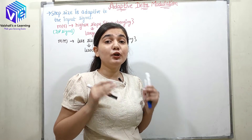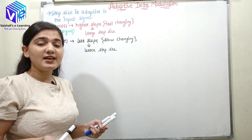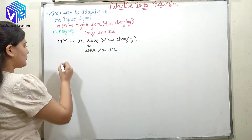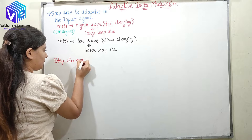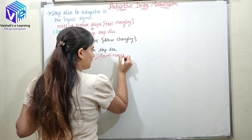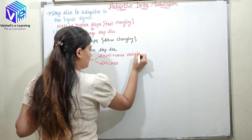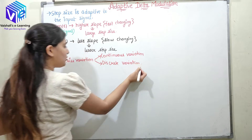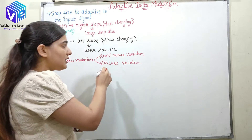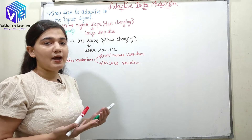Now step size can vary in two manners. The first manner is the continuous variation in the step size, and the second is the discrete variation in the step size. We will be discussing about the discrete variation in the step size — you will be practically seeing how the discrete variation in the step size would happen.